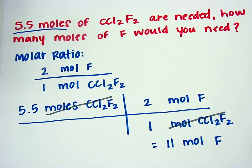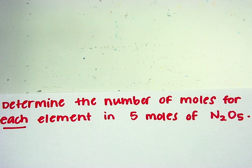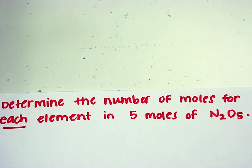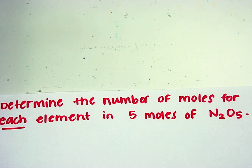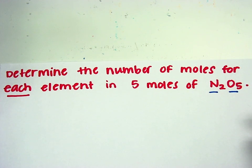An example problem for you is to determine the number of moles for each element in 5 moles of N2O5. When I say each element, I mean all of the elements in the problem. In this case, we have nitrogen and oxygen, so you would have an answer for each.